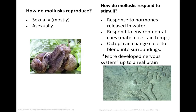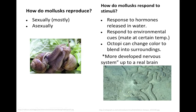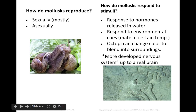Mollusks are mostly sexually reproducing. Some snails have the ability to self-fertilize, meaning they produce both male and female sex cells, but it still takes a male cell and a female cell to make an offspring. Mollusks have lots of responses to their environment — hormones released in water, temperatures they respond to — and octopi can also change their color to blend in with surroundings.